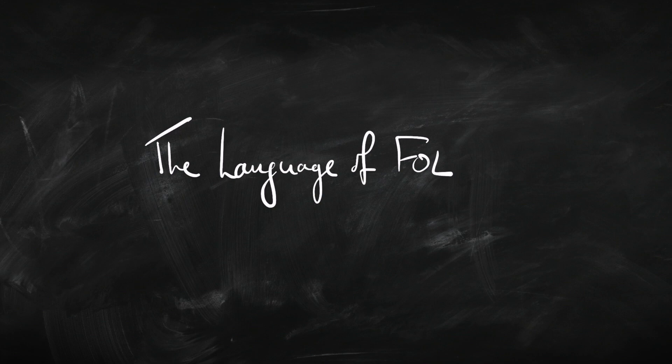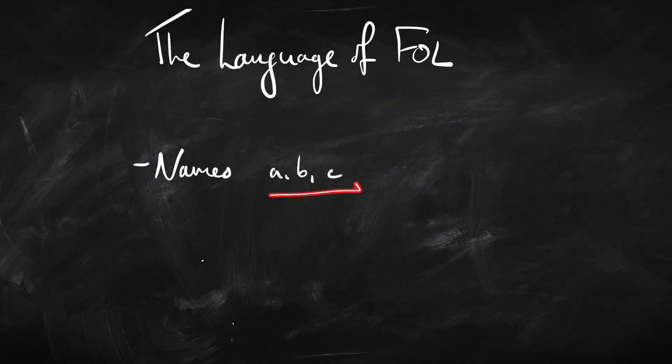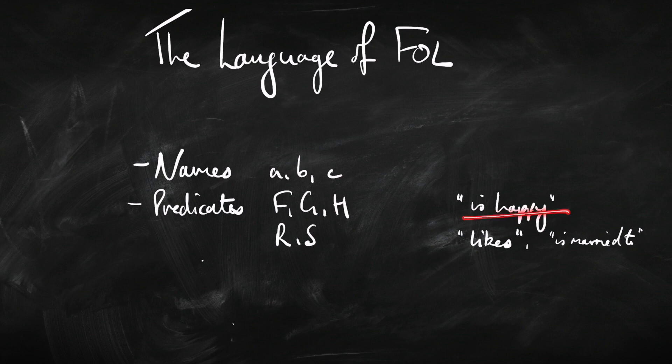So let's go through more carefully how we build up the language of first-order logic — there's a bit more to it than propositional logic, but the nice thing is we can carry over what we learned there. Here are the building blocks: we've got names — A, B, C — written with lowercase letters (sometimes called constants), which pick out particular things. We've also got predicates — in English, things like 'is happy,' 'likes,' or 'is married to' — represented with capital letters like F, G, H, R, or S.